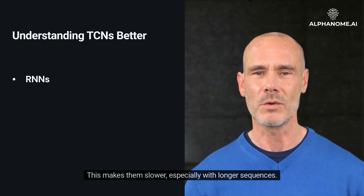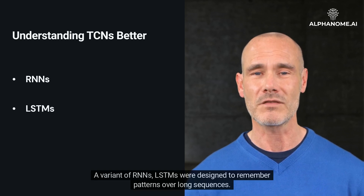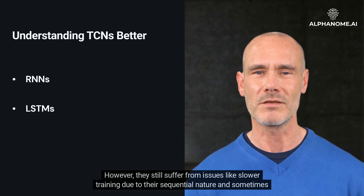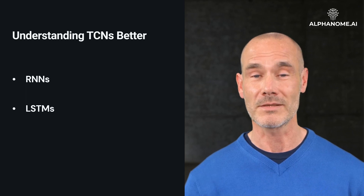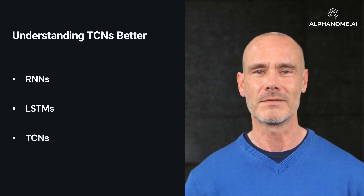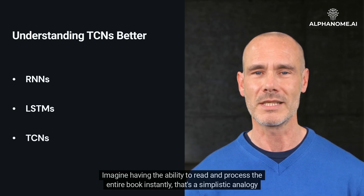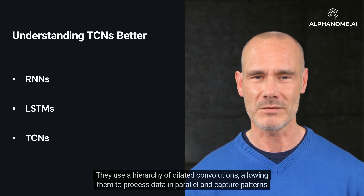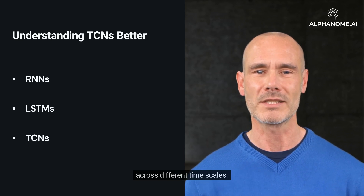This makes RNNs slower, especially with longer sequences. LSTMs, a variant of RNNs, were designed to remember patterns over long sequences. However, they still suffer from issues like slower training due to their sequential nature and sometimes become too complex. TCNs, by contrast — imagine having the ability to read and process the entire book instantly. They use a hierarchy of dilated convolutions, allowing them to process data in parallel and capture patterns across different timescales.